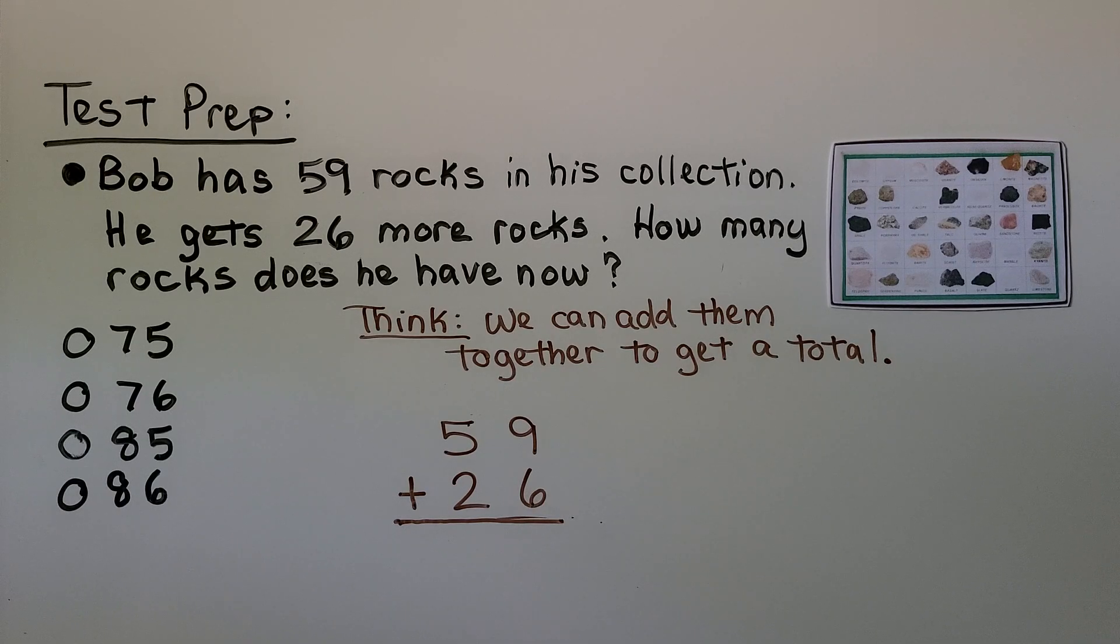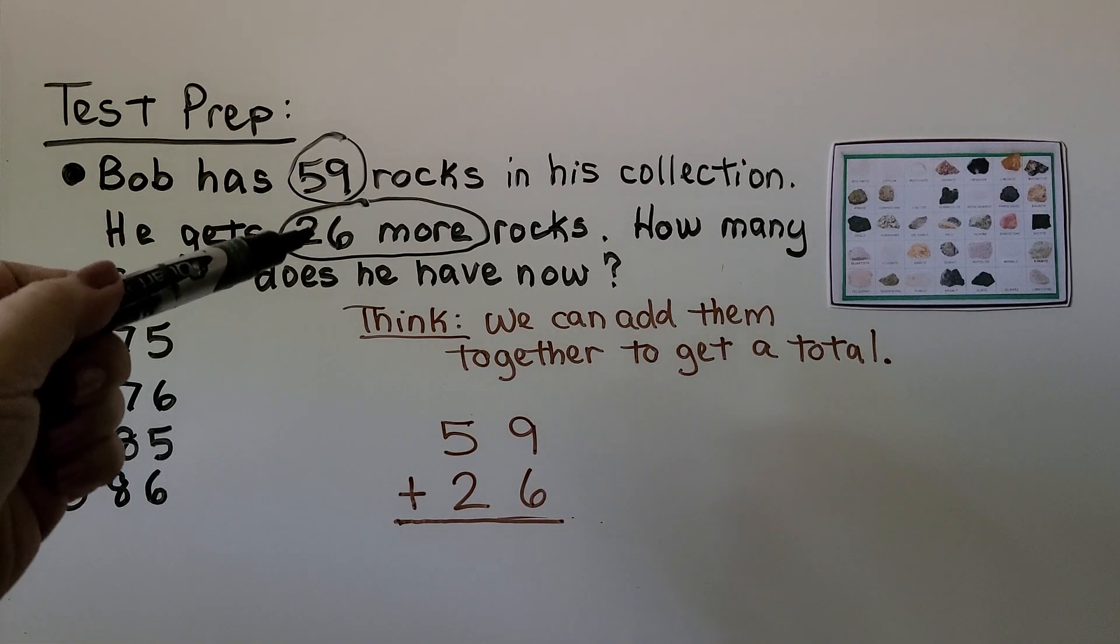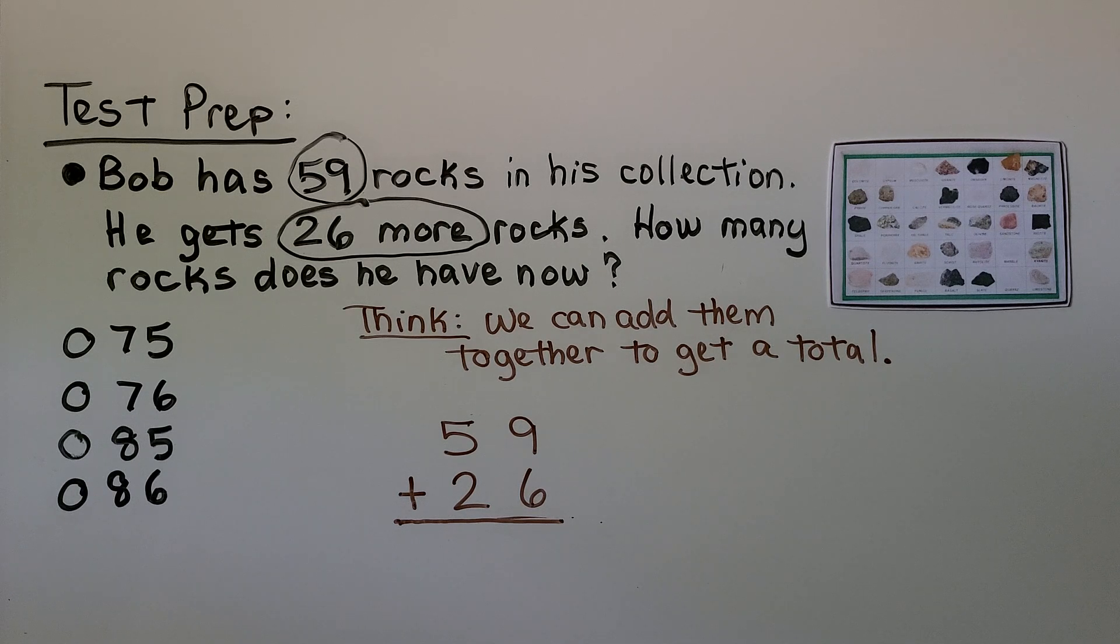Let's try some test preparation. Bob has 59 rocks in his collection. He gets 26 more rocks. How many rocks does he have now? So first, let's circle the important information. There's 59 rocks and 26 more. So we can add them together to get a total. We can add 59 plus 26.